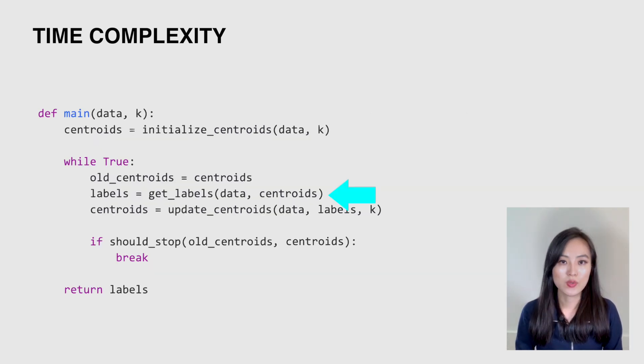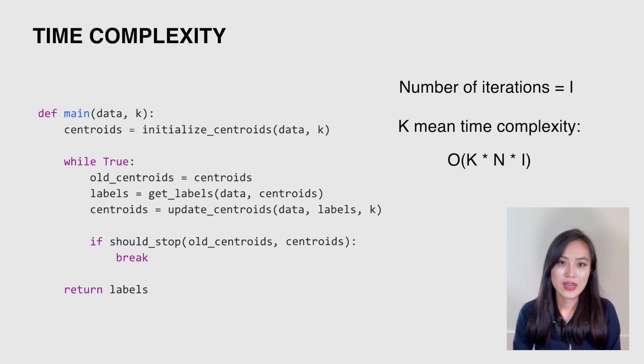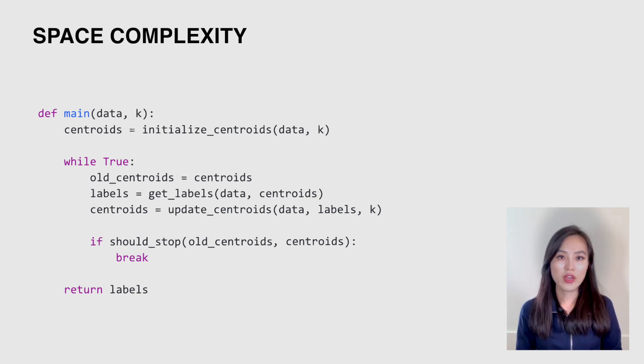Apparently, the bottleneck is to get labels for all data points, which is O(k × n). If the number of iterations of the while loop in the main function is i, what is the overall time complexity of the K-means algorithm? Typically, if a function involves different time complexity in different steps, we will take the largest value as the overall complexity. So in this case it will be O(k × n × i).